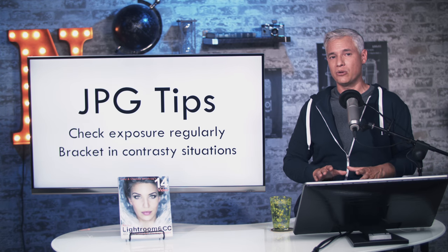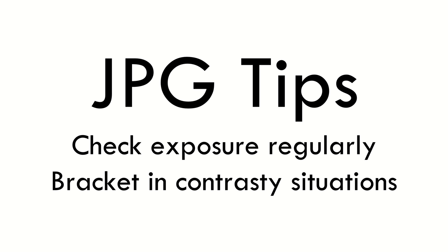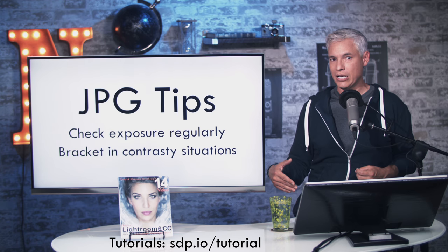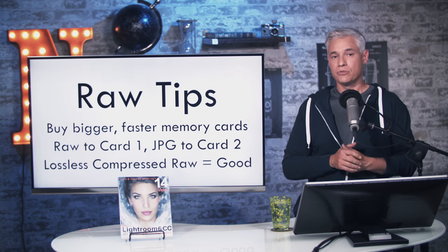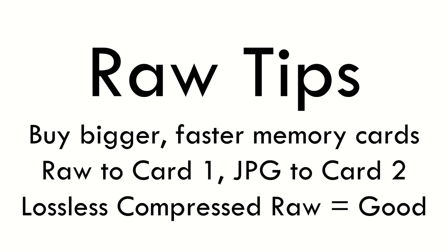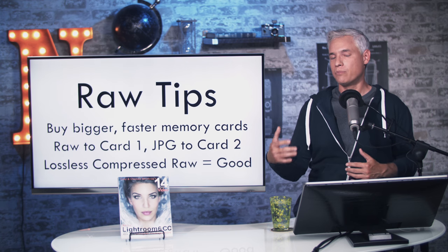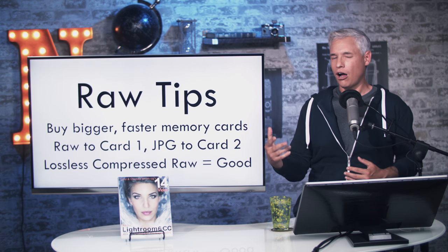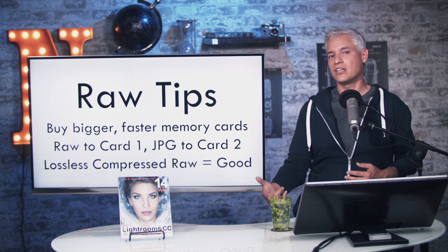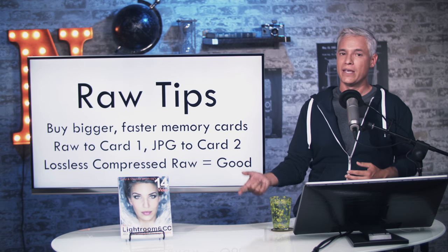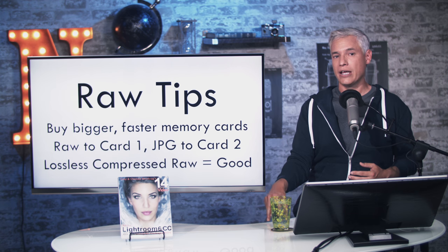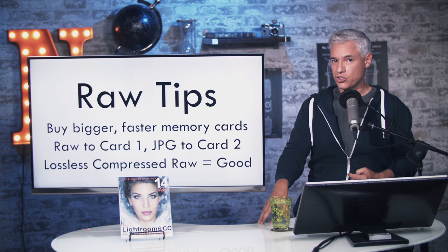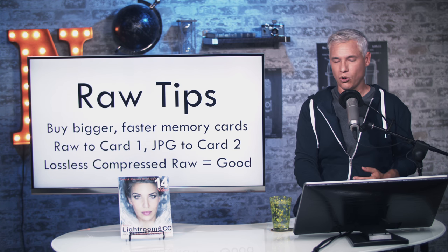Some tips if you do decide to shoot JPEG: check your exposure regularly, know how to use the histogram, and make sure in particular you're not clipping the highlights. Also bracket when you're in contrasting situations. Visit sdp.io/tutorials to find the tutorial for your camera. For shooting RAW, buy bigger and faster memory cards because you're going to be pushing a lot more data. If you have a camera that shoots to two cards simultaneously — like the D810 has one CF card and one SD card — shoot RAW to the faster card and JPEG to the slower card. Also, if the camera gives you the option for losslessly compressed RAW, that's a good thing. Nikon and Sony generally do this and it can reduce the file size, making RAW a little easier to live with.